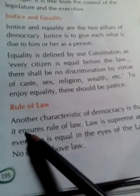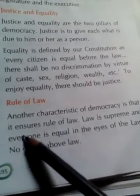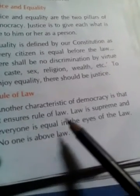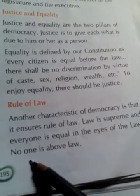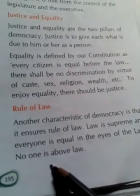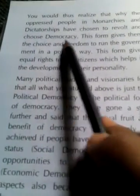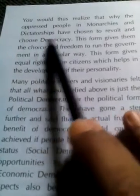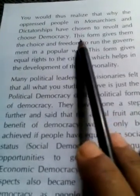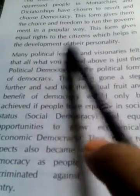The rule of law means that the law is supreme — no one is above the law. In a monarchy or dictatorship, rulers can act as they wish, but in a democracy, no one can place themselves above the law.